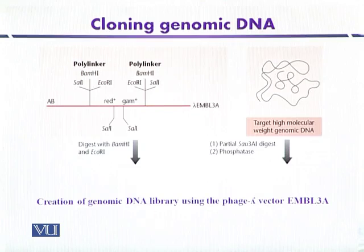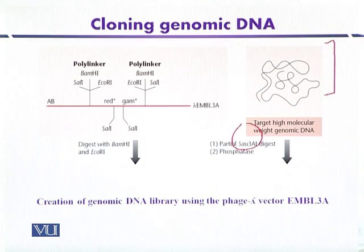First, the source or genomic DNA is digested with a suitable restriction enzyme — here it is Sau3A. Later it is treated with phosphatase so that the 5' phosphate ends are removed, preventing the fragments from ligating together.